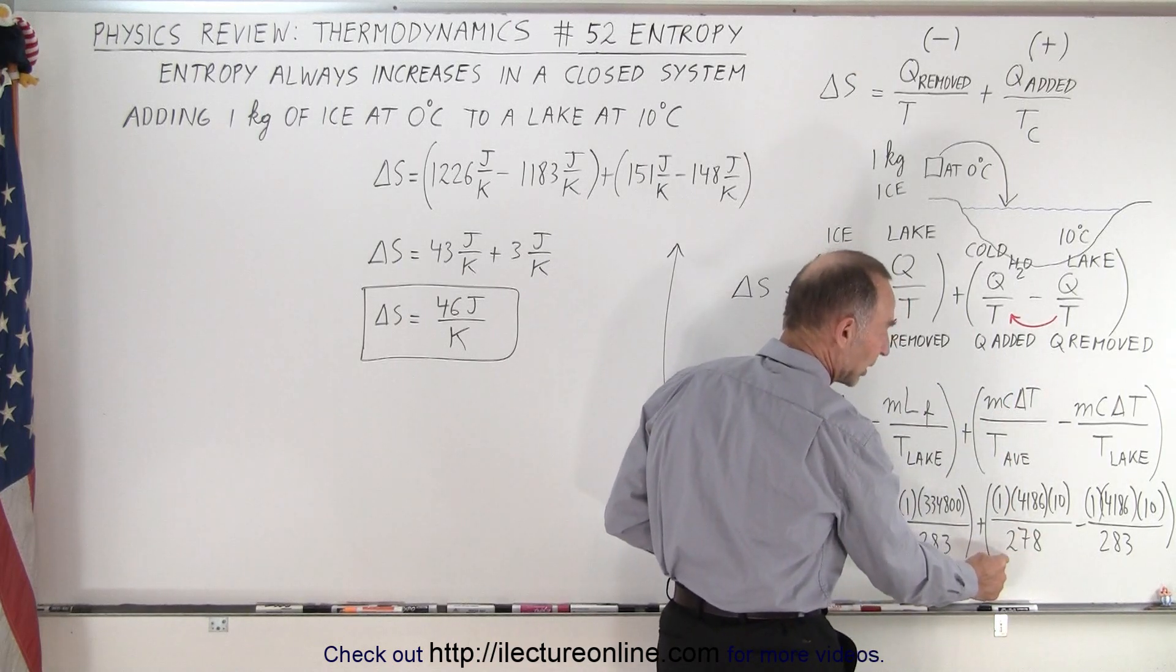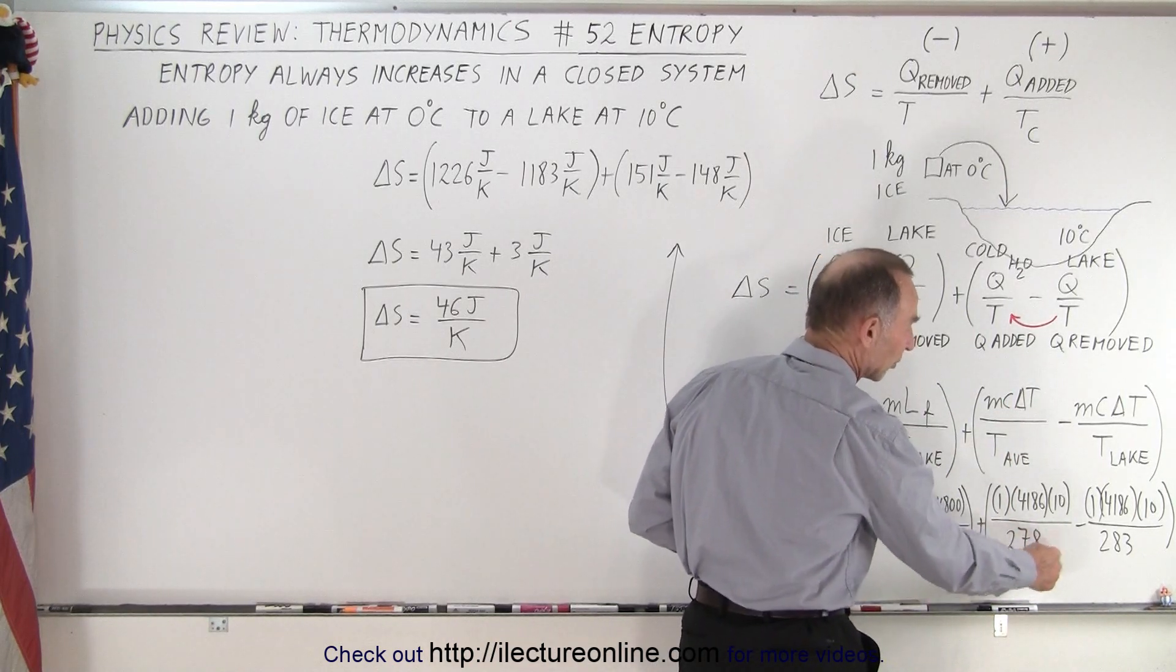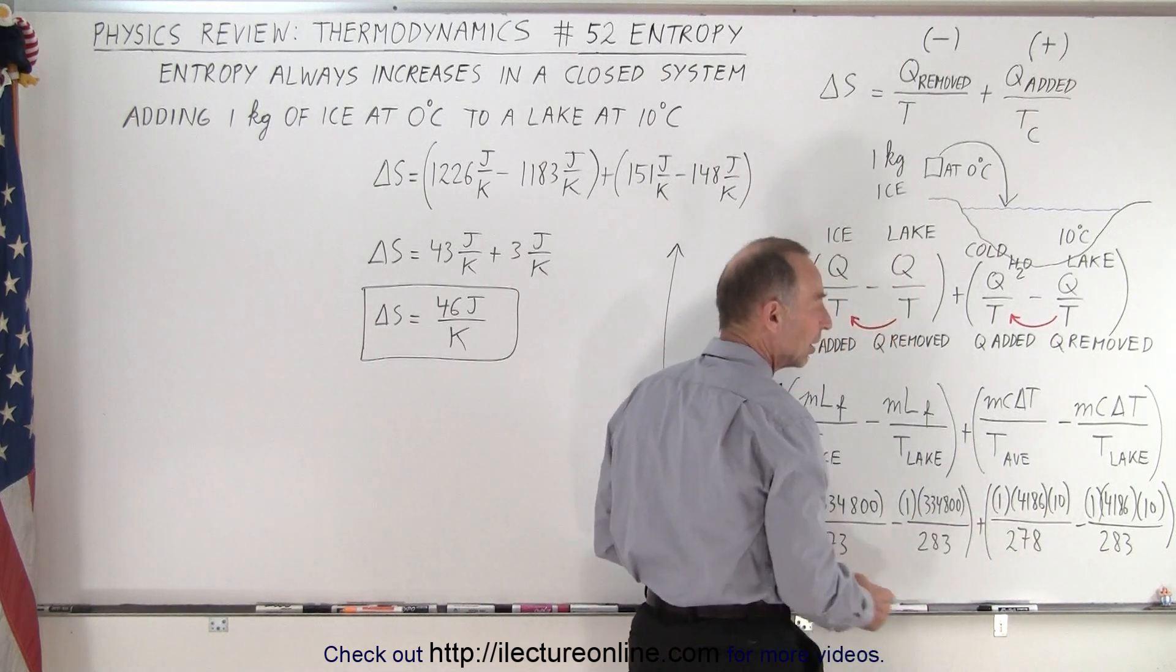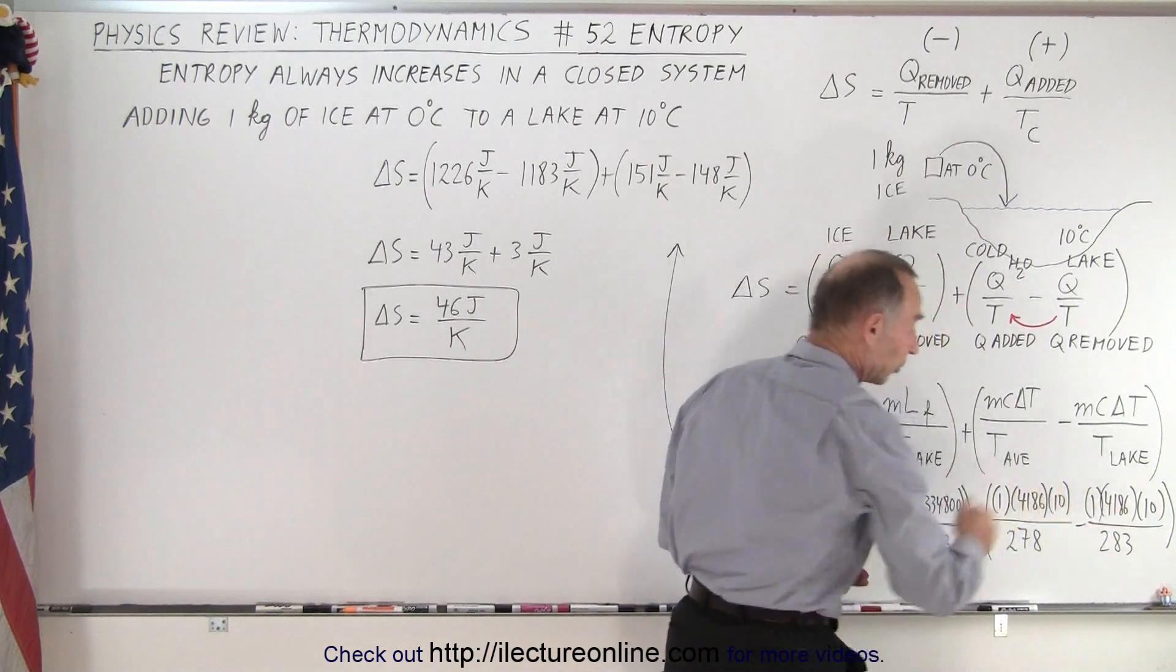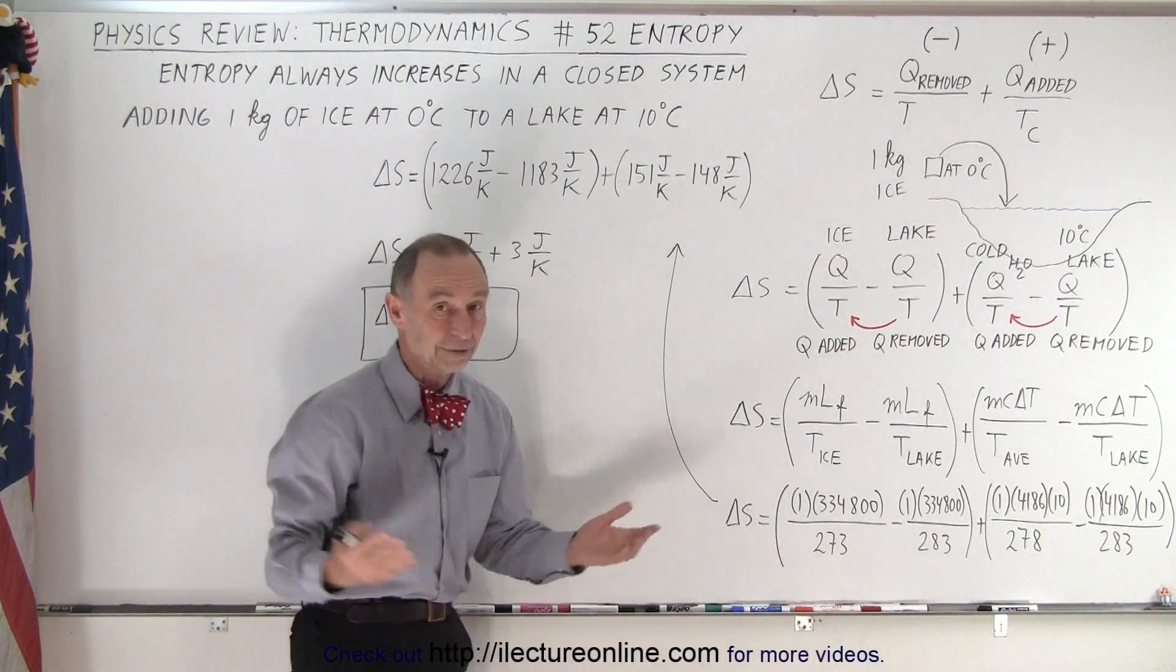which starts at 273 and ends up being at 283, so the average will be 278. The water of the lake stays the same at 283, because it's so big, and therefore we can just put 283 in the denominator.